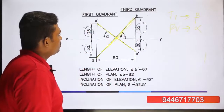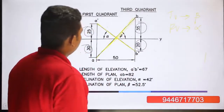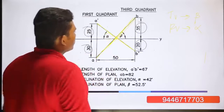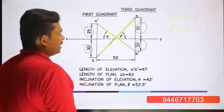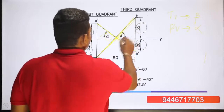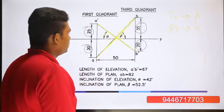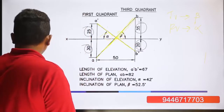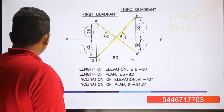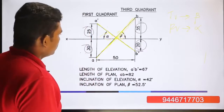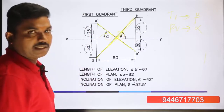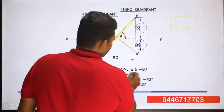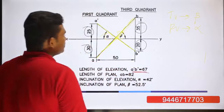In the front view from the A' point, we can write BT. We can measure the A'B' length. The A'B' length is 67mm.